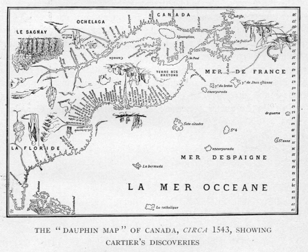Later the area became two British colonies, called Upper Canada and Lower Canada, until their union as the British Province of Canada in 1841. Upon confederation in 1867, the name Canada was officially adopted for the new Dominion, which was commonly referred to as the Dominion of Canada until after World War II.